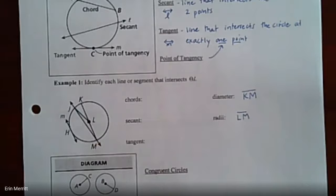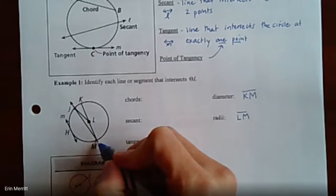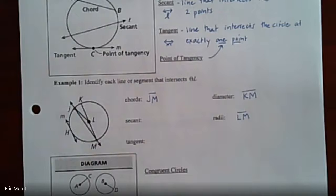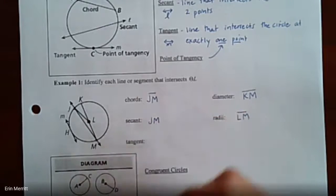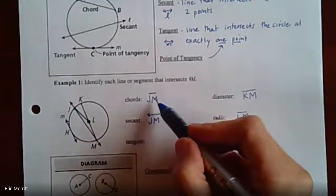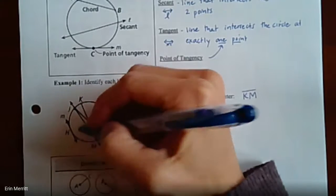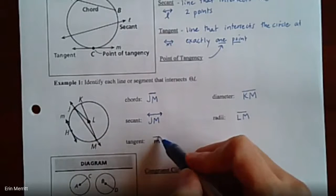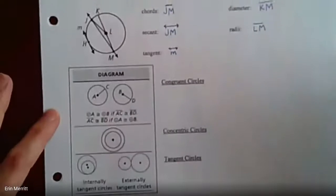A chord just has to go from one edge of the circle to the other — technically every diameter is a chord, but a good example here is segment JM. A secant uses the same points but extends beyond, so I'd write line JM with a line over the top rather than a segment bar. The tangent line runs along the side hitting at point H, so point H is the point of tangency, and the name of the line is the lowercase m shown there.